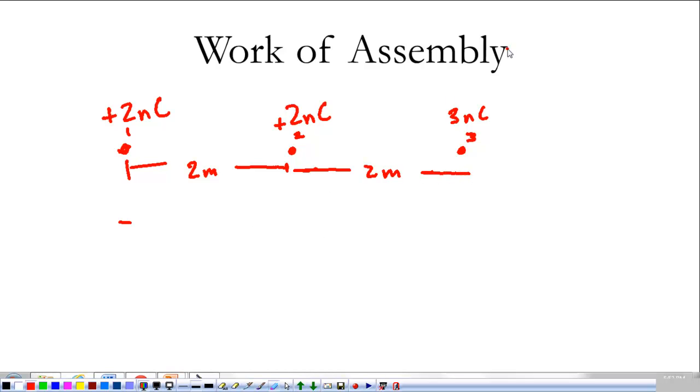Now, the work of assembly is what we're going to call total potential energy. So, think of this. We don't have these two charges here. Just this one. So, the first thing we're going to do is bring this two nanocoulombs charge from infinity to its current location. Well, when I did that, total potential energy, I did the work between KQ1 and Q2 over now the distance that's separating.